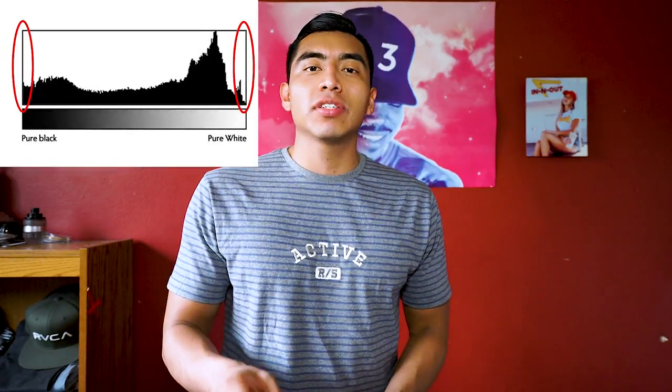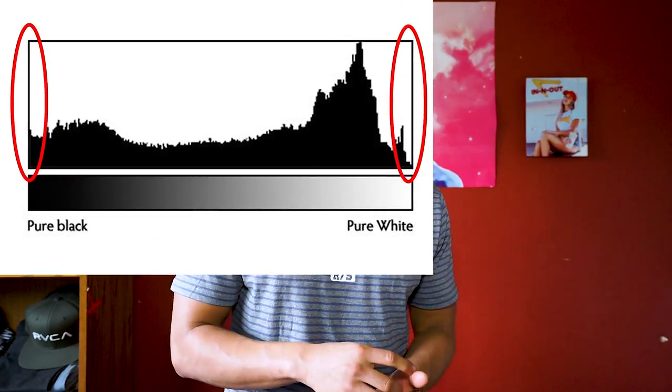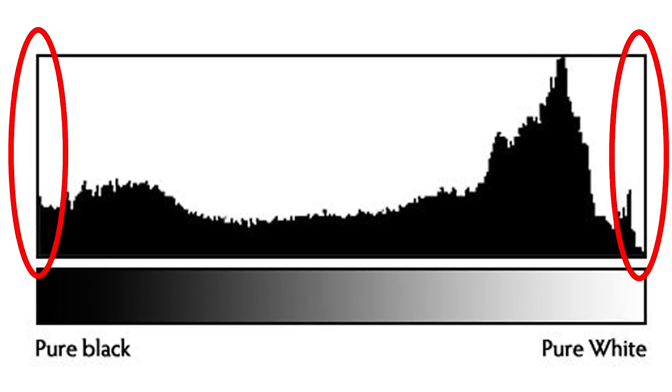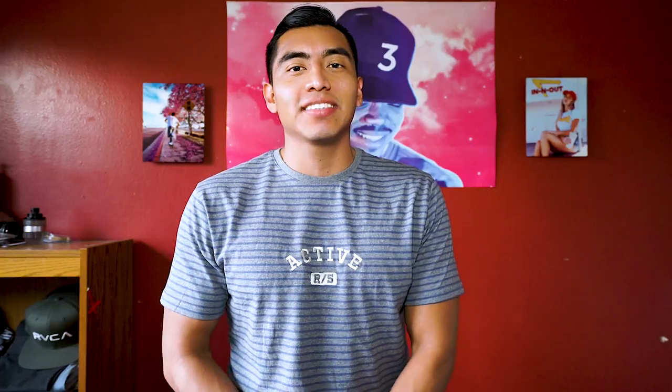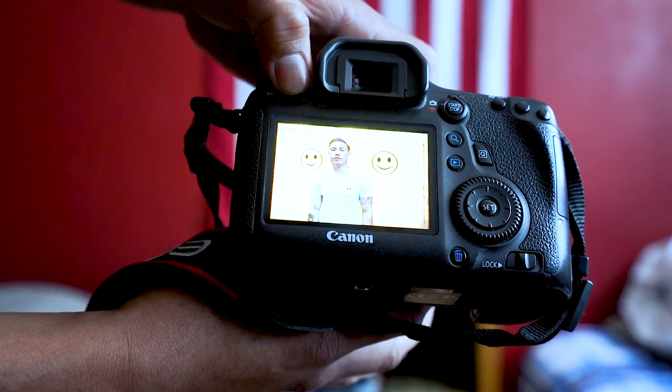To prevent this from happening, you want to avoid peaking, which means do not let your graph touch the left side of the border or the right side of the border. Once your graph has touched the left side of the border, you have lost information in your darkest shadows. Once it's touched the right side of the border, you have lost detail in your brightest highlights.